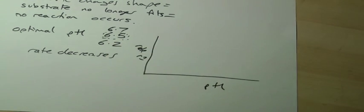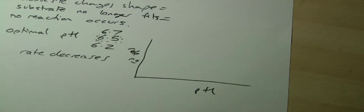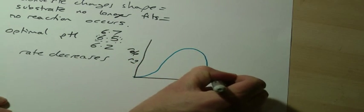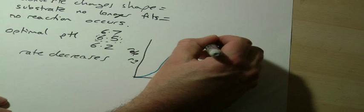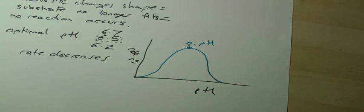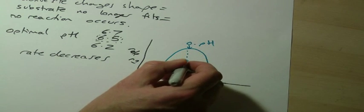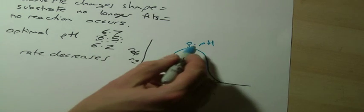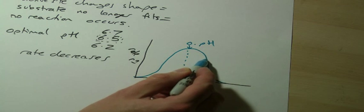So rate of reaction, we get this typical bell shaped curve, something like that. There's the optimal pH at the top, the pH it works best at. So our example here is 6.5. Changing it will decrease the rate of reaction.